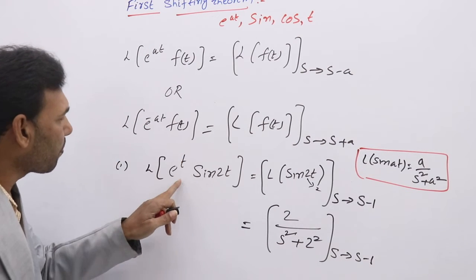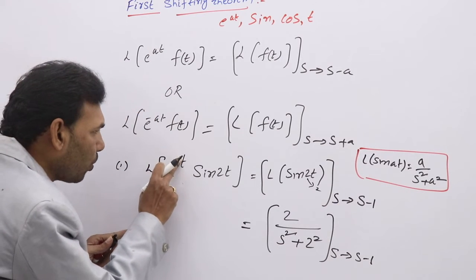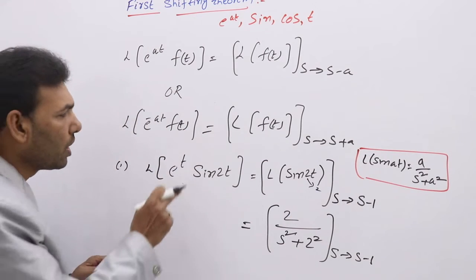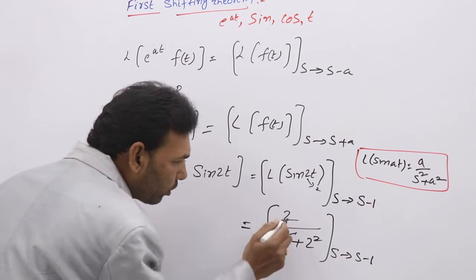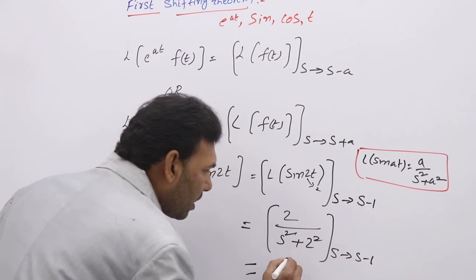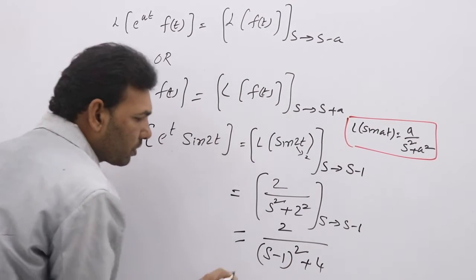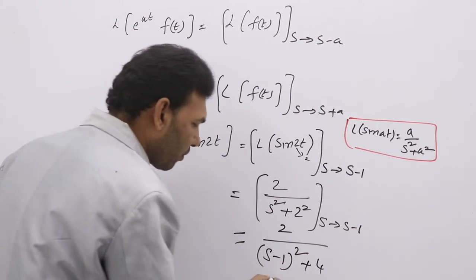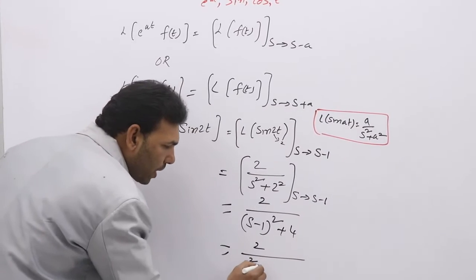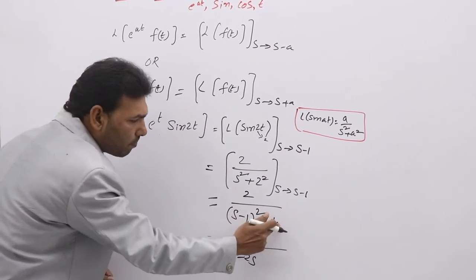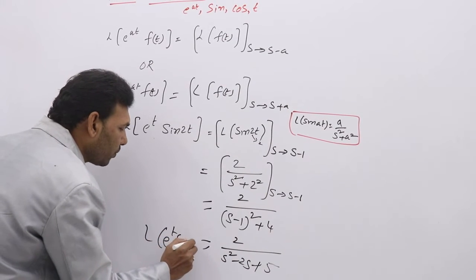Since we have e^t here (a = 1), we replace s by s minus 1. Writing s minus 1 in place of s: L{e^t · sin(2t)} = 2 / ((s−1)² + 4). If needed, you can expand the denominator using (a−b)² = a² − 2ab + b² to get s² − 2s + 1 + 4 = s² − 2s + 5.